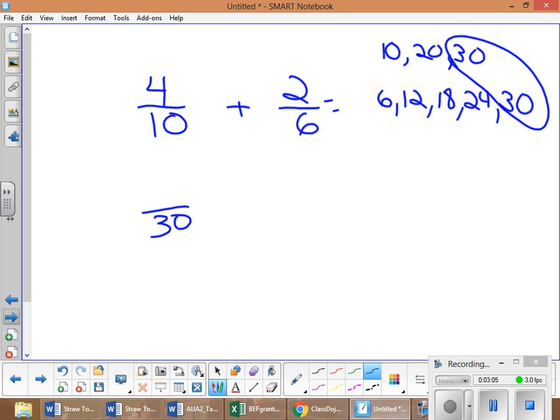Down here I'm going to change that one to a 30 and this one to a 30. I have to ask myself how many times - 10 times what equals 30? I know it's 10 times 3, so now we have to do 4 times 3 because whatever you do to the denominator you have to do to the numerator. So 4 times 3 is 12, so twelve-thirtieths equals four-tenths.